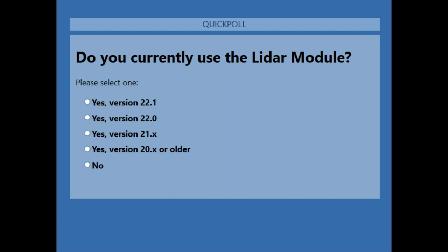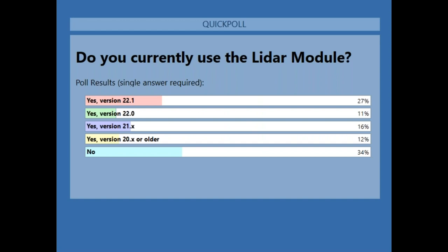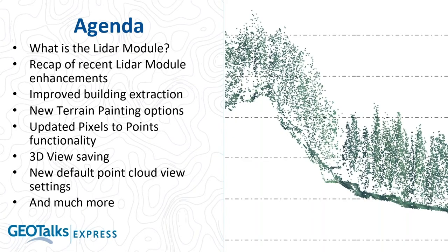Given that a third of attendees are not using the LiDAR module, we're going to spend some time introducing its key tools. We'll show where you can activate the module — via the Help menu and License Manager in Global Mapper — to initiate a trial. Just like you can try the software itself, you can request a trial of the LiDAR module and evaluate it with your own point cloud data.